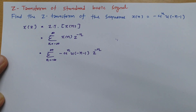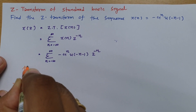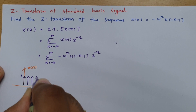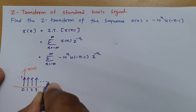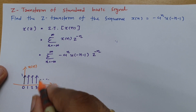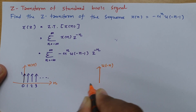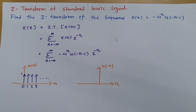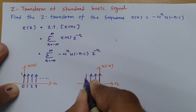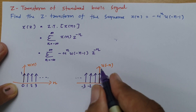We need to determine what the signal u(-n-1) looks like. We know u(n) has magnitude 1 starting from 0 going to positive infinity. From this, u(-n) is the folded version — if you fold u(n) with respect to the zeroth sample, you get magnitude 1 at 0, -1, -2, -3, and so on. That is u(-n).